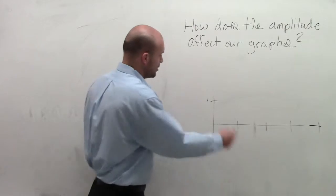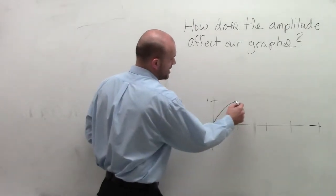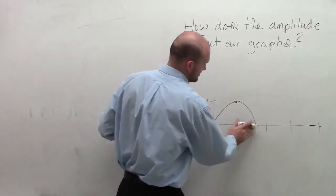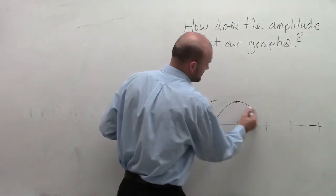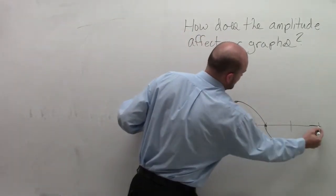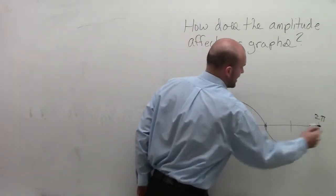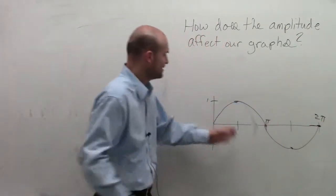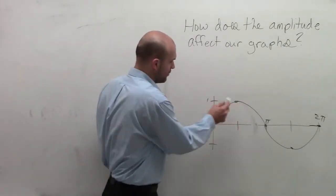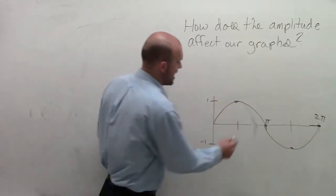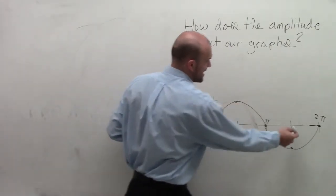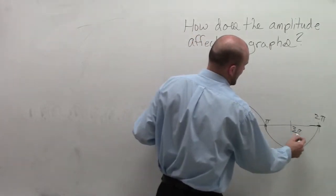OK, so for the sine graph, we know it goes up, goes down, comes back up. So that is our initial period where we know it goes all the way to 2π, intersects at π, has a maximum point of 1 at π/2, and a minimum point at 3π/2.